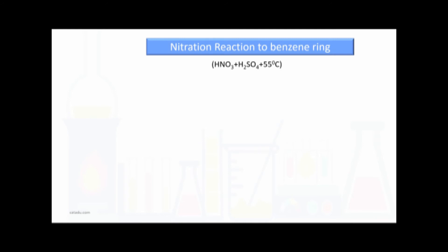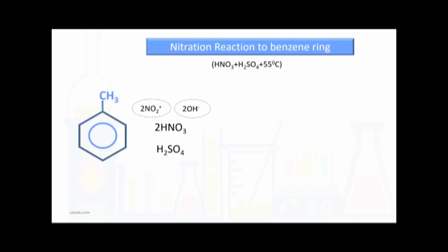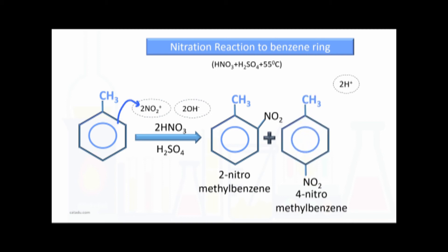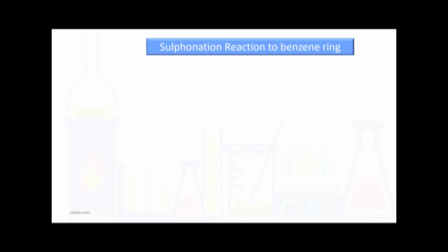The nitration reaction at the benzene ring: the reagent is nitric acid and the condition is sulfuric acid as catalyst at 55°C. Under these conditions, the electrophile NO₂⁺ is produced, and the pi electrons of benzene are attracted towards NO₂⁺. We get two products: 2-nitromethylbenzene and 4-nitromethylbenzene. Two hydrogen ions and water are produced as by-products.